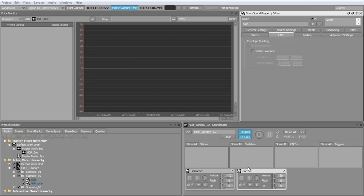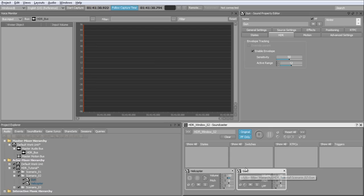To set amplitude envelopes, you need to select Enable Envelope in the HDR tab of an object. For this scenario, we've selected the gun sound. As soon as the checkbox is enabled, WISE analyzes in the background the actual amplitude over time for an audio file.